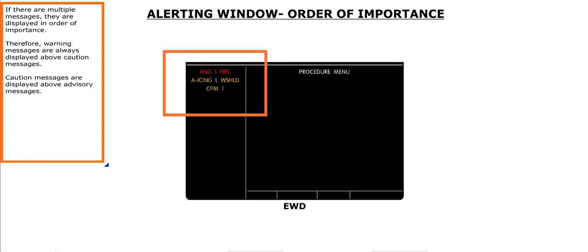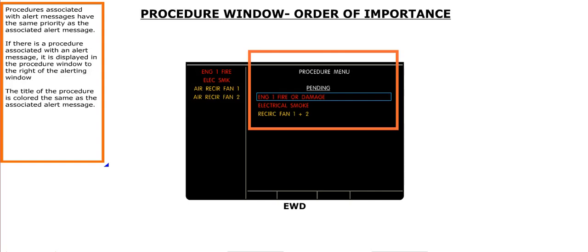If there are multiple messages, they are displayed in order of importance. Therefore, warning messages are always displayed above caution messages. Caution messages are displayed above advisory messages. Procedures associated with alert messages have the same priority as the associated alert message. If there is a procedure associated with an alert message, it is displayed in the procedure window to the right of the alerting window. The title of the procedure is colored the same as the associated alert message.